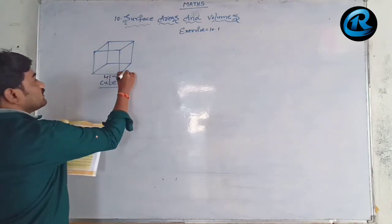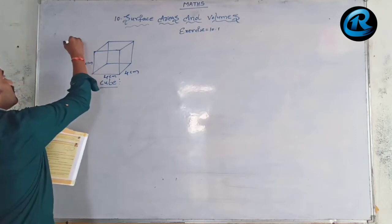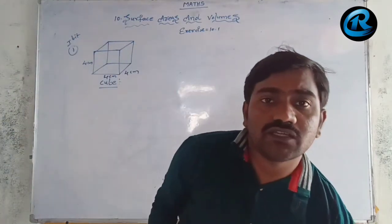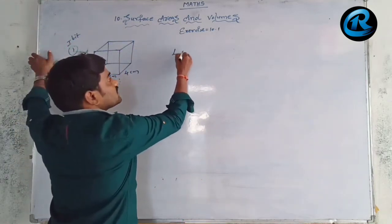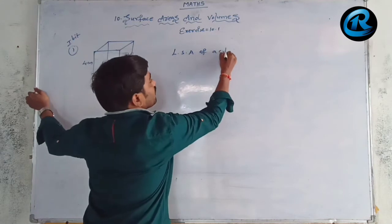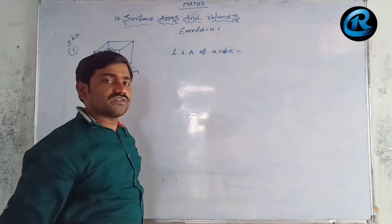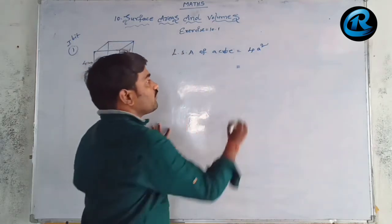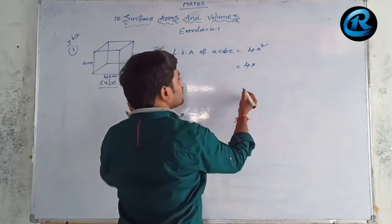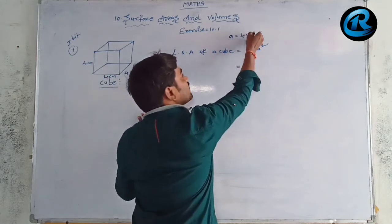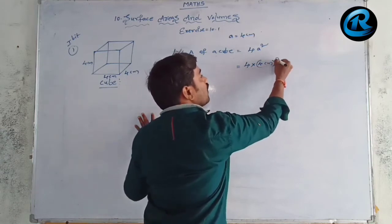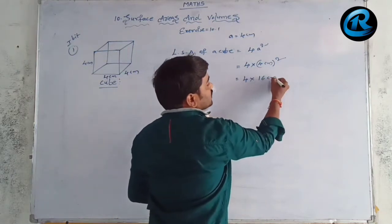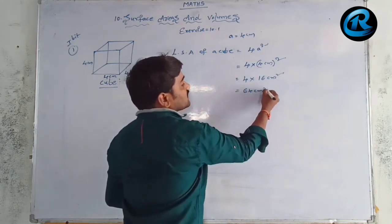First question: a cube of side 4 cm. Lateral surface area of a cube — the formula is 4a². So 4 × (4)² = 4 × 16 = 64 cm². That is the lateral surface area of the cube.